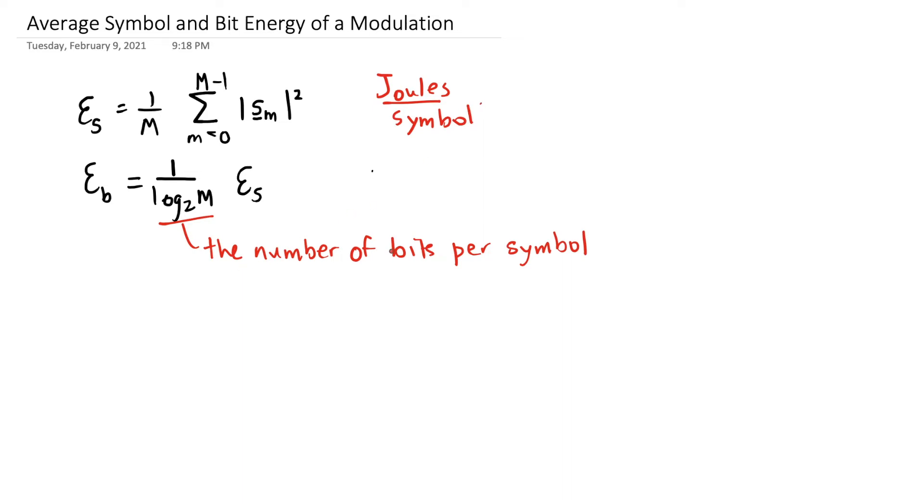Then if I have the number of bits per symbol, then I'm going to end up here with units of joules per bit.